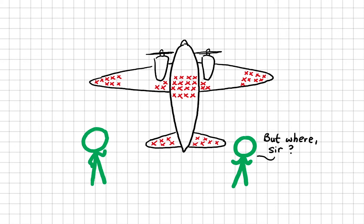They were about to make a terrible mistake by upgrading the armor in the sections with the most crosses. Why is that the case?